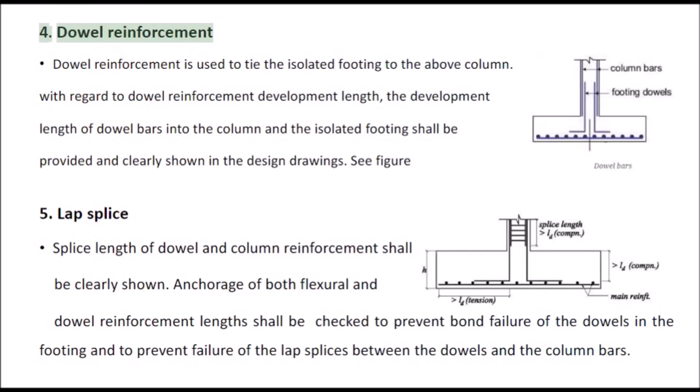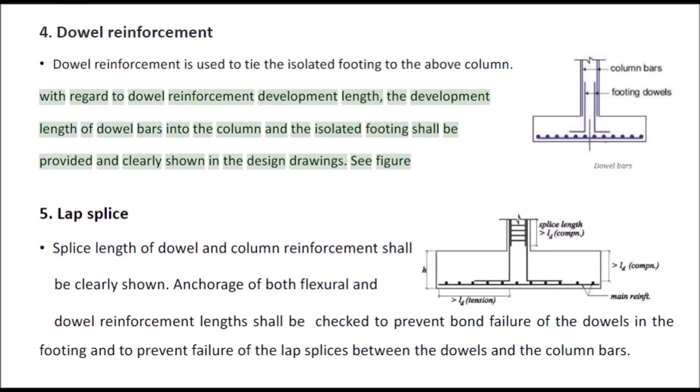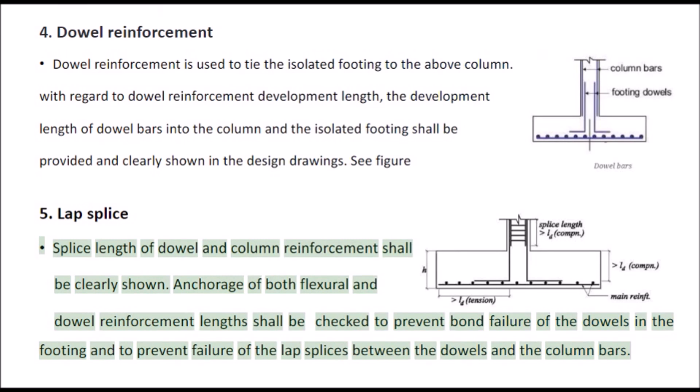Dowel reinforcement is used to tie the isolated footing to the column above. The development length of dowel bars into the column and into the isolated footing shall be provided and clearly shown in design drawings. Lap splice: The splice length of dowel and column reinforcement shall be clearly shown. Anchorage of both flexural and dowel reinforcement lengths shall be checked to prevent bond failure of the dowels in the footing and failure of lap splices between the dowels and column bars.